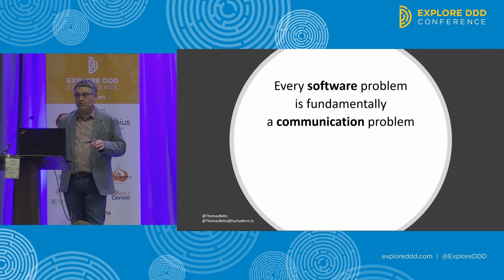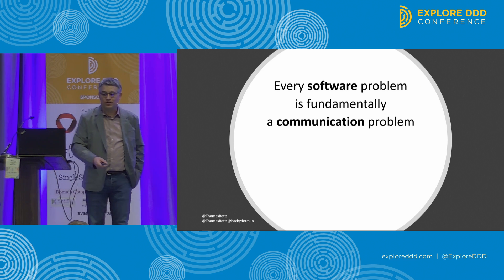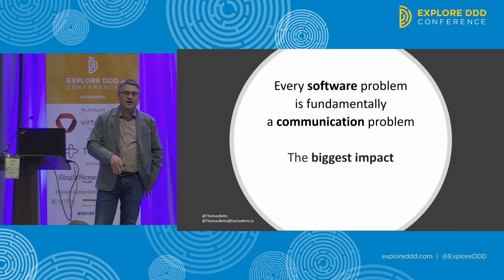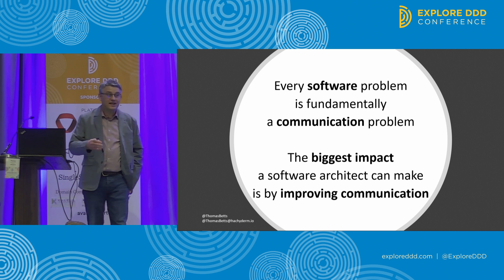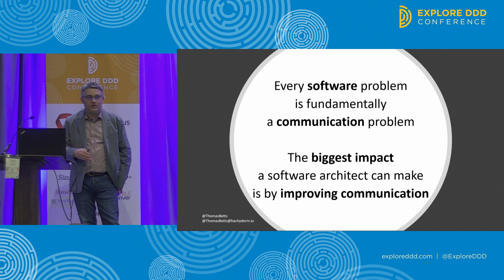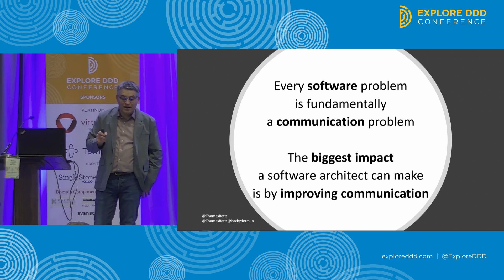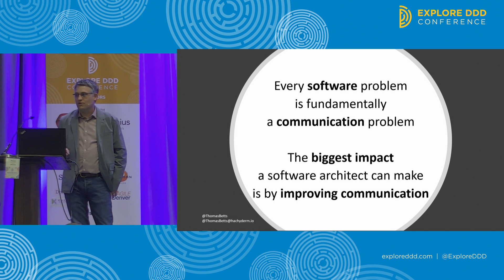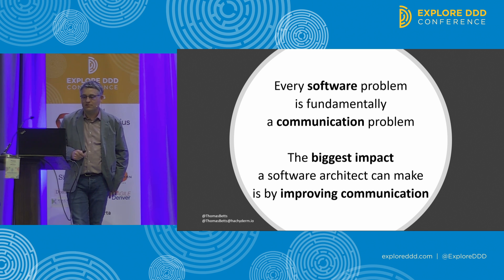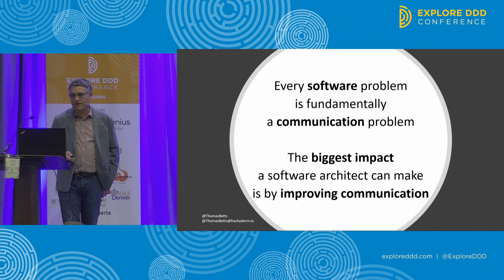So if every software problem is fundamentally a communication problem, the biggest impact that an architect can have is by improving communication. We can improve how our systems talk to each other, how people write the software, how two people talk and reason about the software. Architects are able to make positive impact in all of those communication paths.